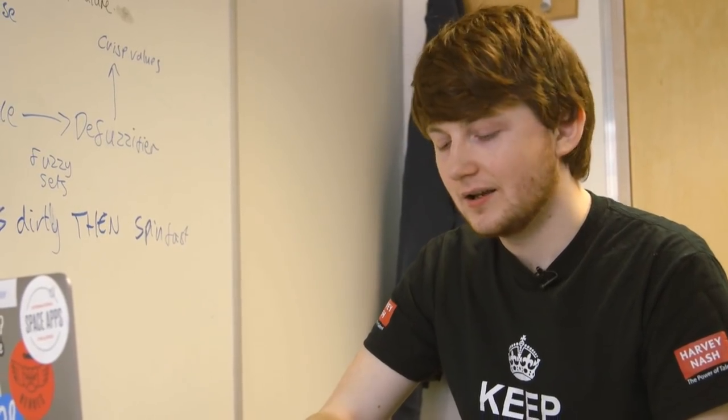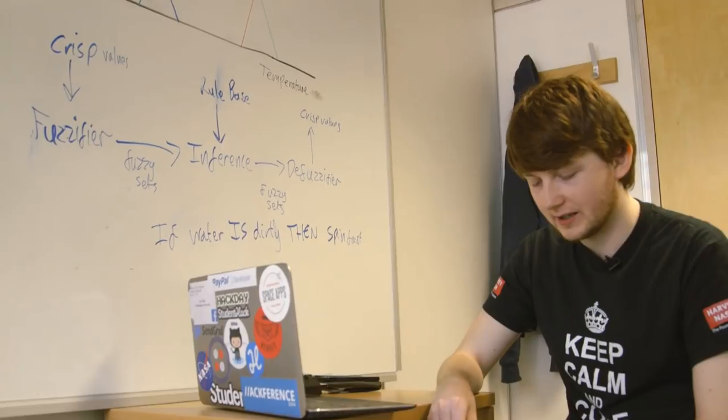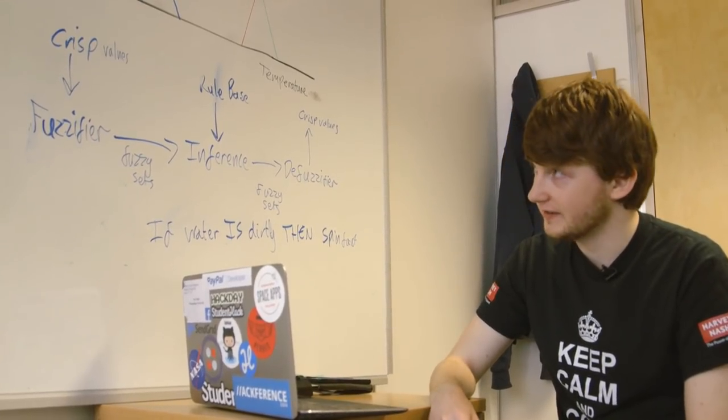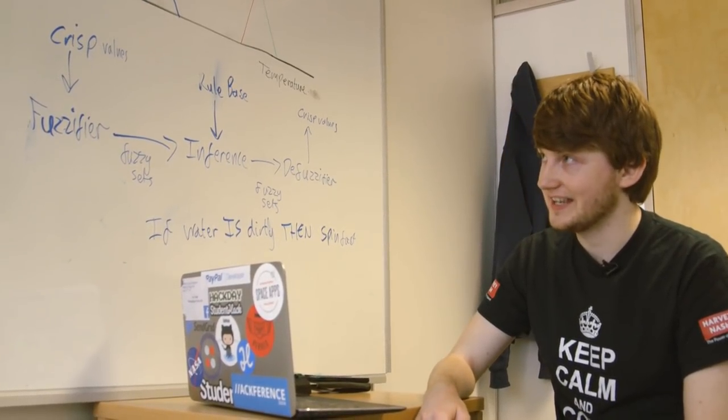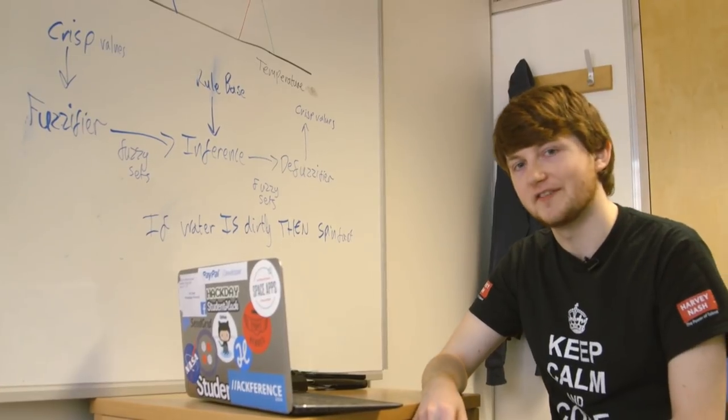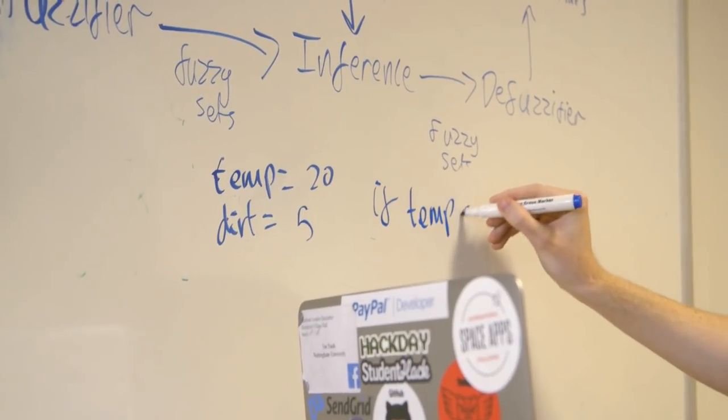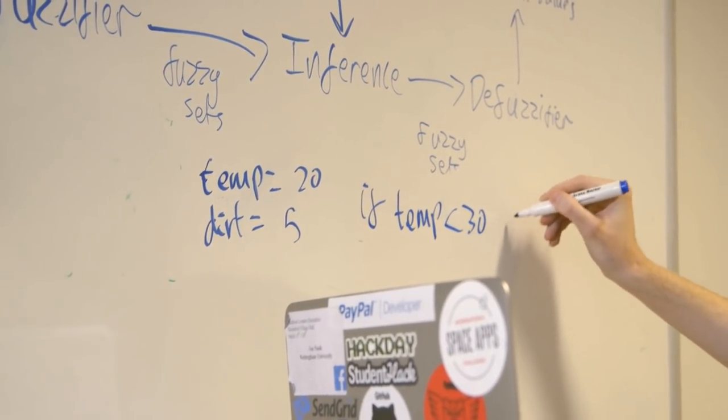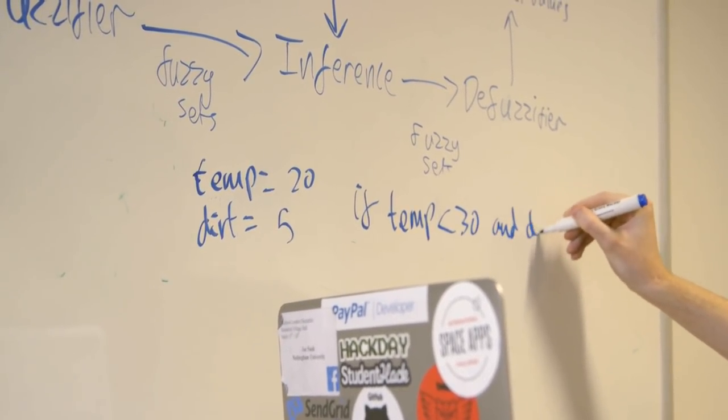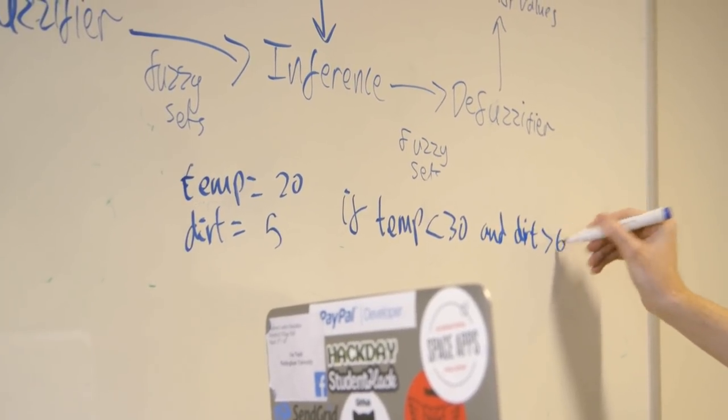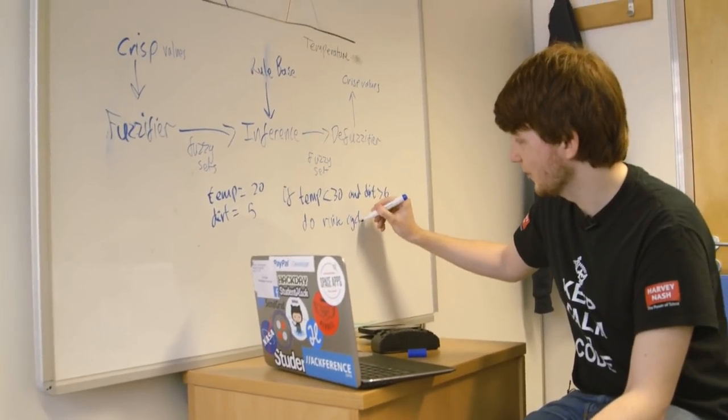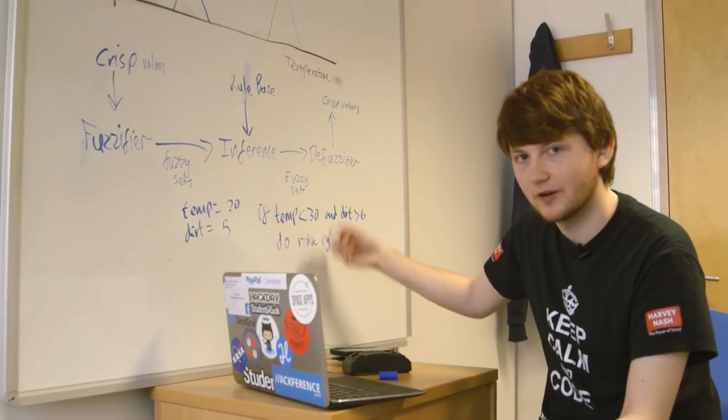How does it work when it's not using fuzzy logic? We'd probably end up taking our measurements, our crisp values, and instead applying an awful lot of if statements to them. If temp is less than 30 and dirt is greater than 6, do rinse cycle, or something like this. You'd have to do this over and over again.